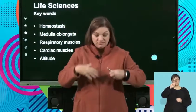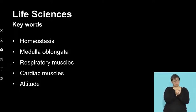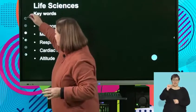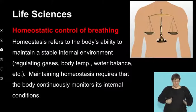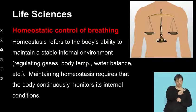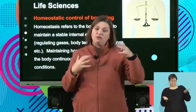Homeostasis has come up a lot in the sections you've looked at, and even in the last section I spoke about the pH. Homeostasis is this constant balance — that's why I've put a diagram of a scale up here. Gases — oxygen and carbon dioxide — must be in balance in our body. We can't have too much of one or the other.